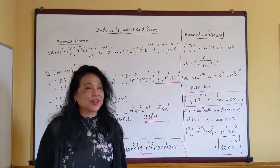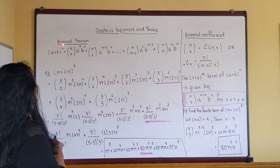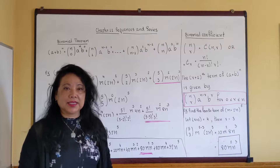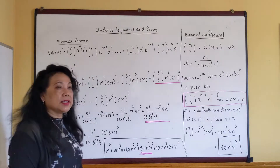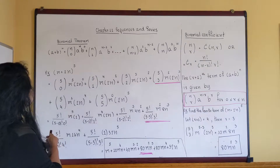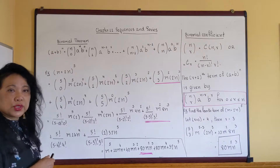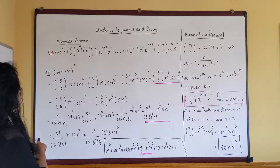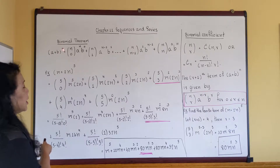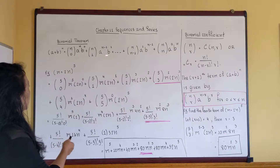Let's finish our last section of chapter 11, called the Binomial Theorem. Some of you might see this in statistics, but if you've never seen it before, that's okay too. The binomial theorem formula requires two terms: the first term called 'a', the second term called 'b', raised to the nth power where n is an integer, and you expand in this form.